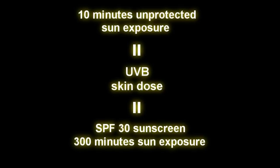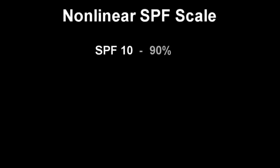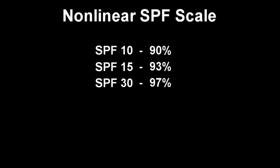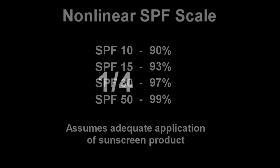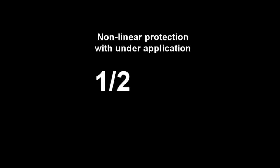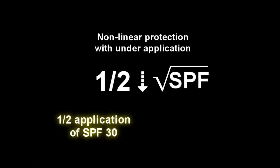SPF-30 would allow 300 minutes with the same exposure. However, with regards to the product's ability to block UVB rays, the SPF scale is not linear. SPF of 10 blocks 90% of UVB rays, SPF-15 blocks 93%, SPF-30 blocks 97%, and SPF-50 blocks 99% of the sunburn-causing UVB rays. These numbers assume adequate application of the product. In reality, it's estimated that most consumers use one-quarter to one-half of the requisite amount, and under-application does not give a linear reduction in sun protection — a half-application of an SPF-30 sunscreen only provides an effective SPF of 5.5.